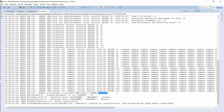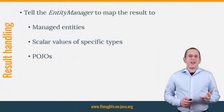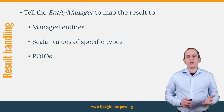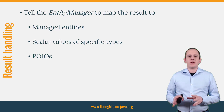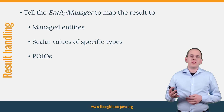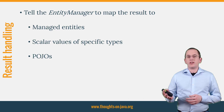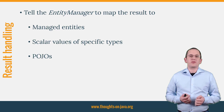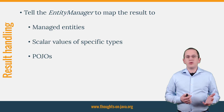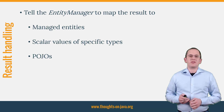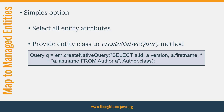Let's talk about result mapping before I show you named native queries. As you have seen in the previous code snippets, your native query returns an object array or list of object arrays. You can change that if you provide additional mapping information to the entity manager. By doing this, you can tell the entity manager to map the result into managed entities, scalar values of specific types, maps, or POJOs. Showing you all of that in full detail would be too much for this video, but I want to show you the general concept and I provide links to more information in the video description.